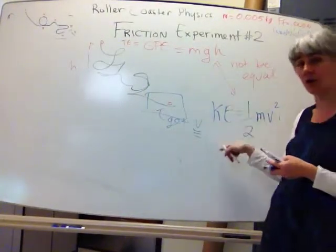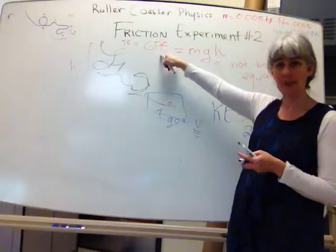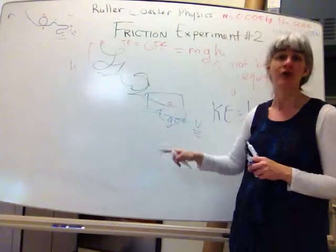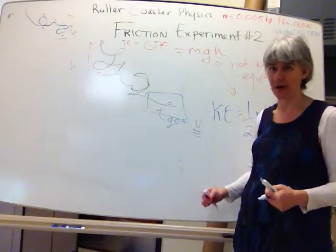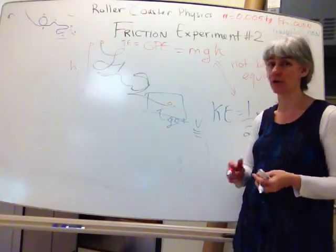If energy were conserved, the energy at the top of your track, which is all GPE, should be equal to the energy at the bottom of your track, which is all kinetic energy. But energy has been lost due to the force of friction.